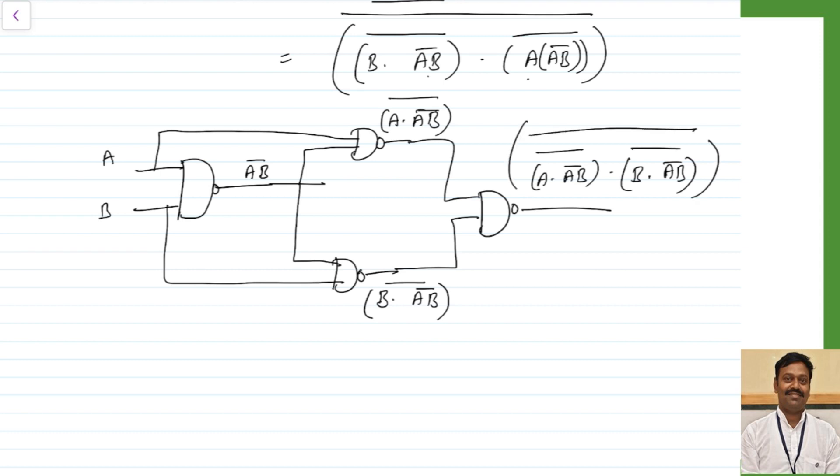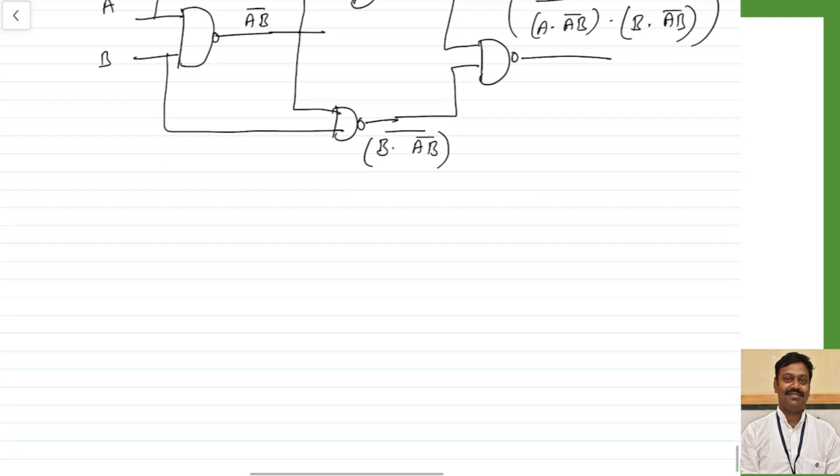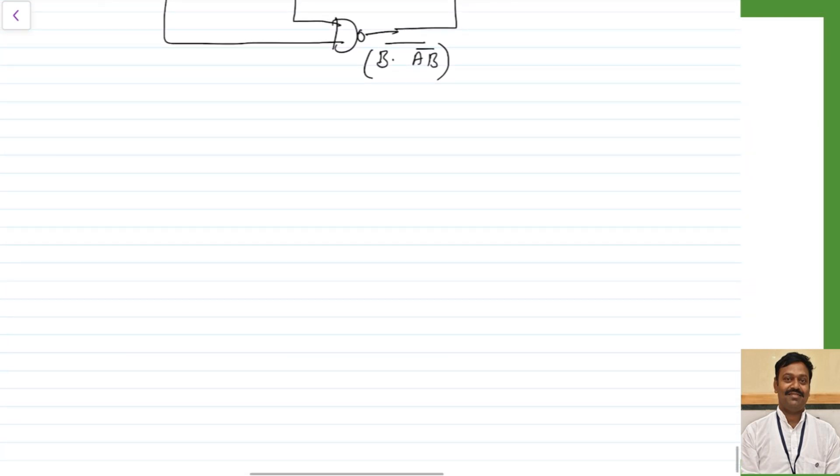So this gives us A into AB bar whole bar, dot B into AB bar whole bar, all bar — which is exactly what we want. We obtained this using 4 NAND gates, so this is the implementation using the minimum number of NAND gates.